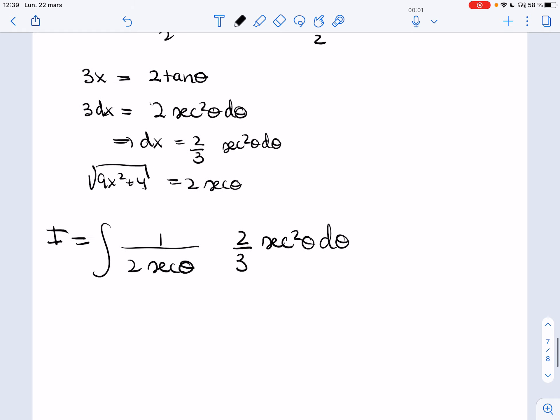All right, the 2s cancel. One of the secants cancel. So I get 1 third integral of secant theta d theta. And this is one of the ones that we've learned.